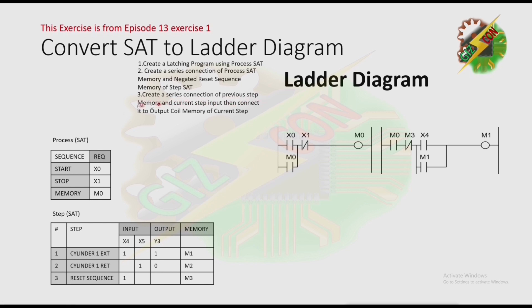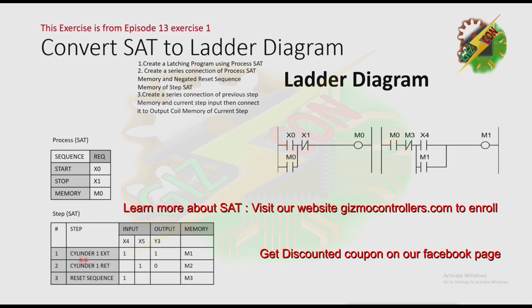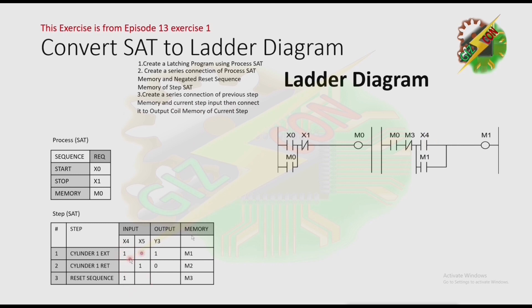Then, create a series connection of the previous step SAC memory and connect it to the output coil memory of the current step. Let's start with step 1. For the series connection of the previous step memory — if this is step 1, the previous step is blank, so we will not series anything here. The current step input is x4, so we have x4 here, and we connect it to the output coil memory of the current step, which is m1.